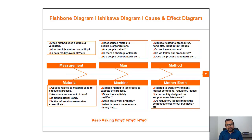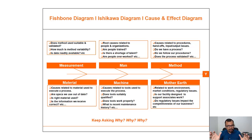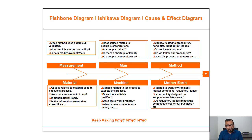Under Method, we look at causes related to procedures, handoffs, inputs, and output issues. Do we have a process in place? Do we follow the right process? Is the process validated? Under Man, we look at root causes related to people and organizations — are people trained? Is there a shortage of talent? Are people overworked?